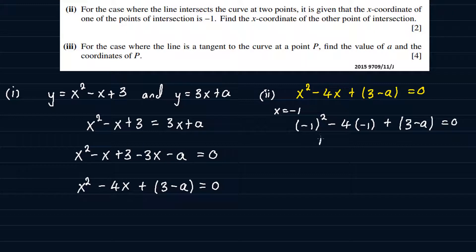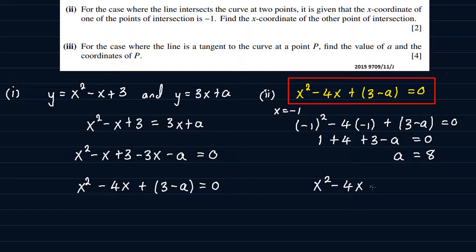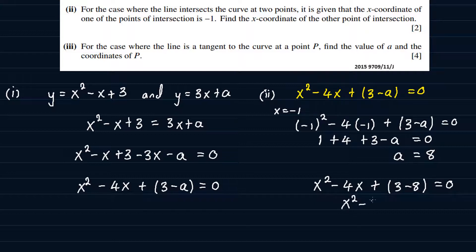Simplifying: minus 1 squared is 1. Minus 4 times minus 1 gives plus 4. So we have 1 plus 4 plus 3 minus a equals 0, which gives us 8 minus a equals 0, therefore a is equal to 8. Which means the quadratic equation becomes x squared minus 4x plus 3 minus 8, equal to 0 — that's x squared minus 4x minus 5 is equal to 0.